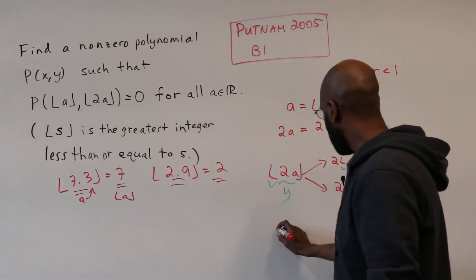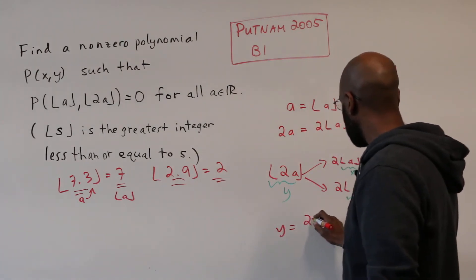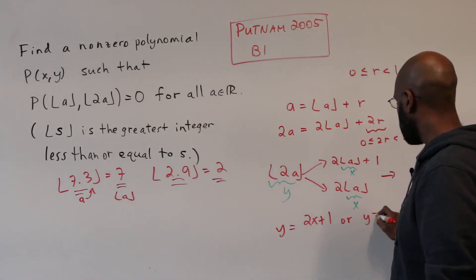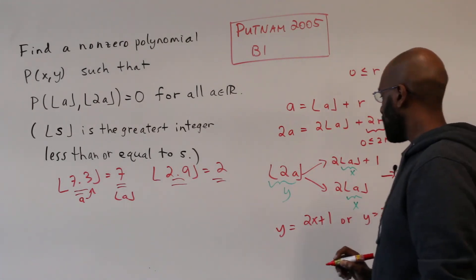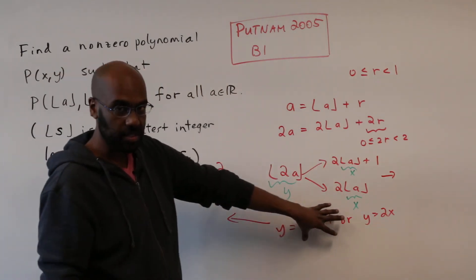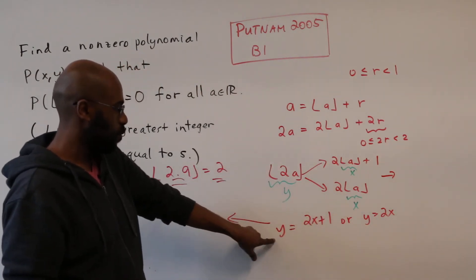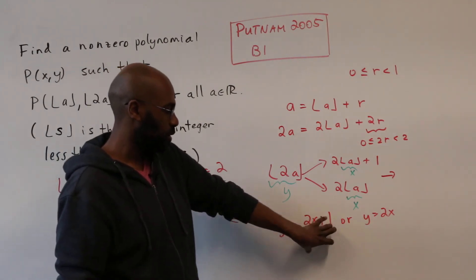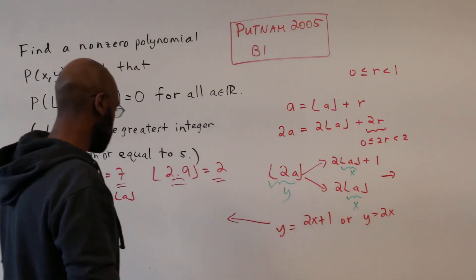we either have that y is equal to 2x plus 1 or y is equal to 2x, right? And so as a consequence, if we multiplied the difference of these, another way to word this is that y minus 2x plus 1 is 0 or y minus 2x is 0.